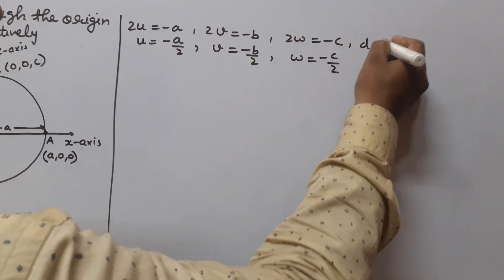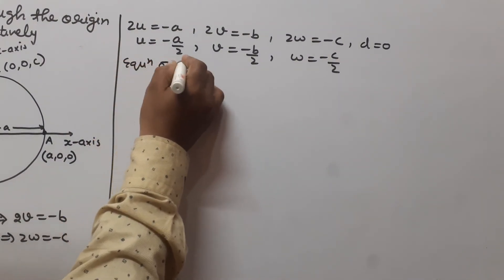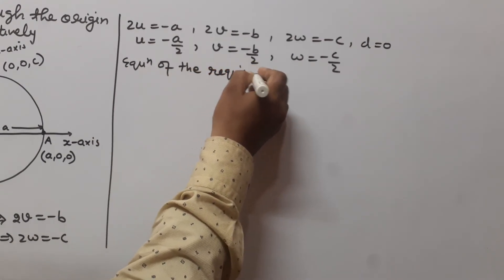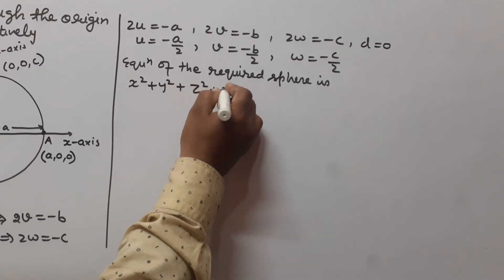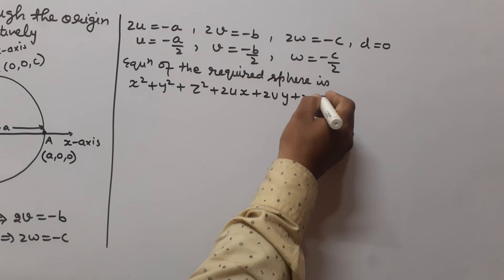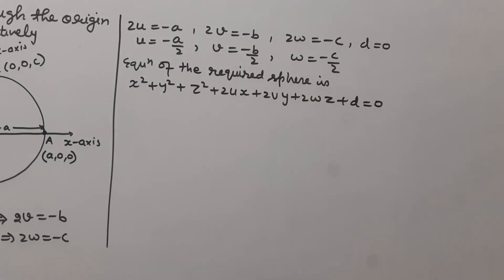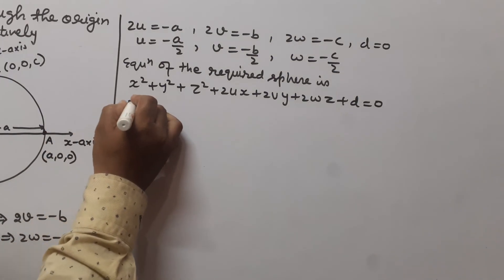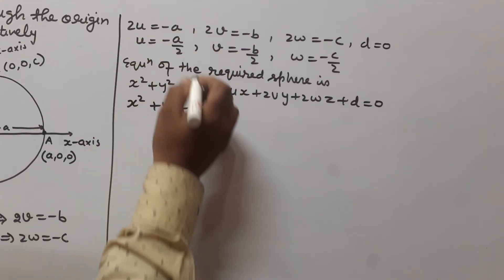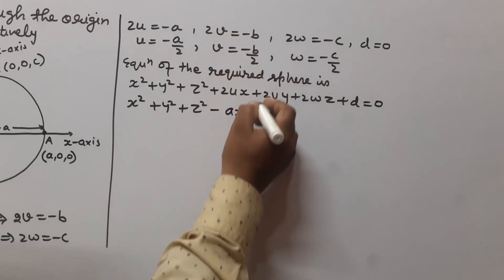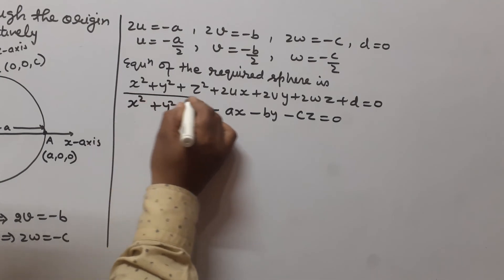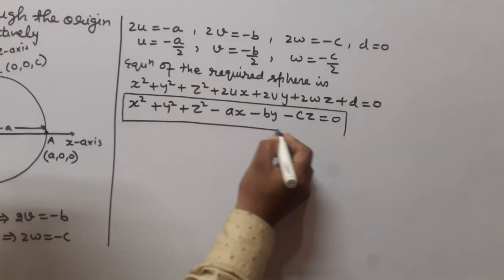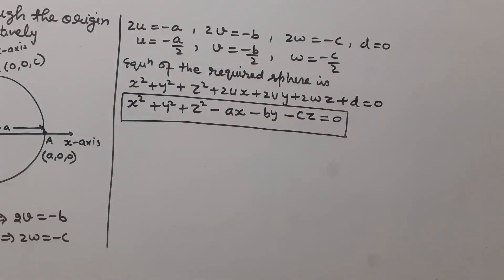The equation of the required sphere is x² + y² + z² + 2Ux + 2Vy + 2Wz + D = 0. Substituting the values, since 2U = −a, 2V = −b, 2W = −c, and D = 0, we get: x² + y² + z² − ax − by − cz = 0. This is the equation of the sphere passing through the origin and making intercepts a, b, c on the X, Y, Z axes respectively.